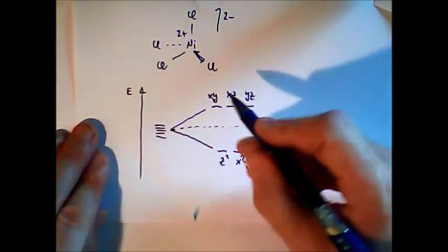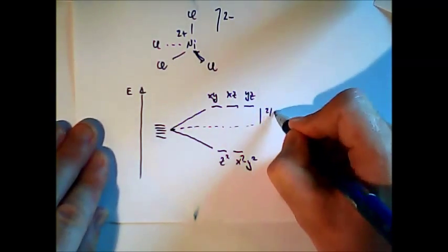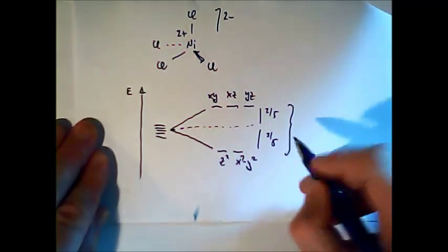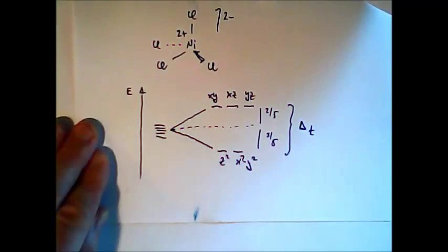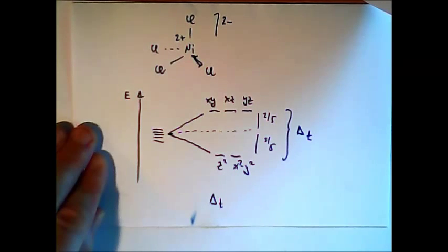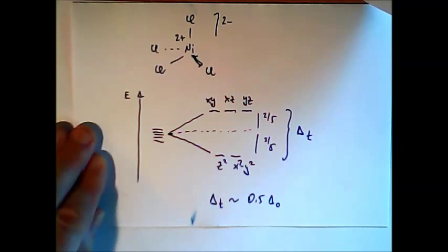We find the inverse electron configuration then for octahedral complexes: 2 over 5, 3 over 5. And the whole energy gap is called not delta O but delta T for tetrahedral. And we can know also that delta T is much lower than the corresponding delta O. Delta T is only about one half of delta O. And that means that tetrahedral compounds always have high spin configuration.